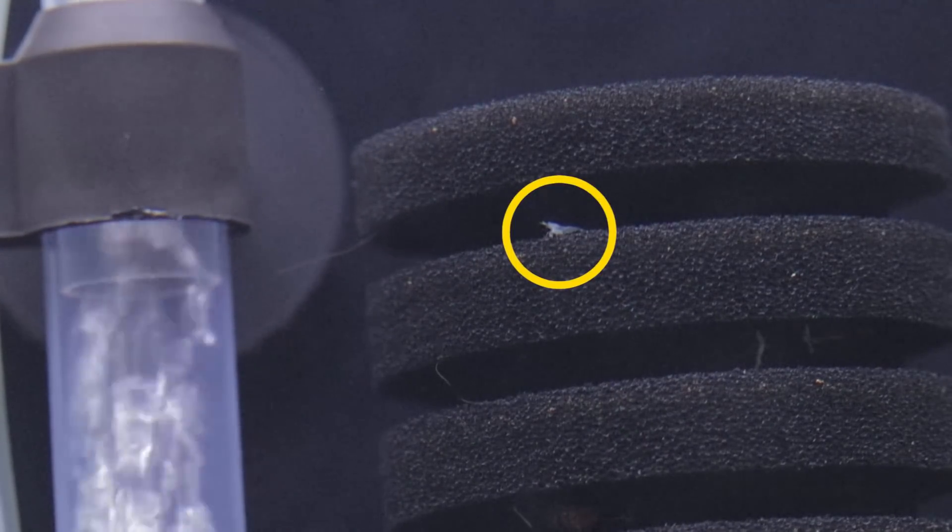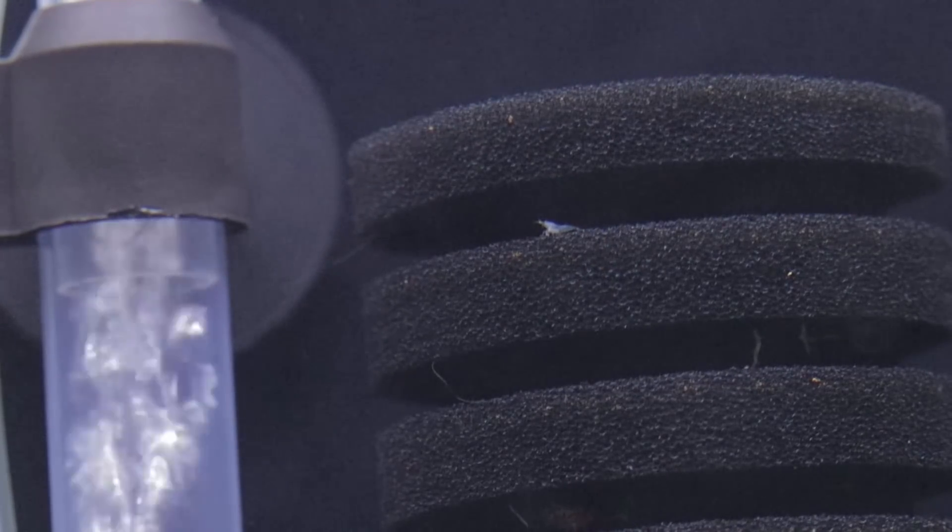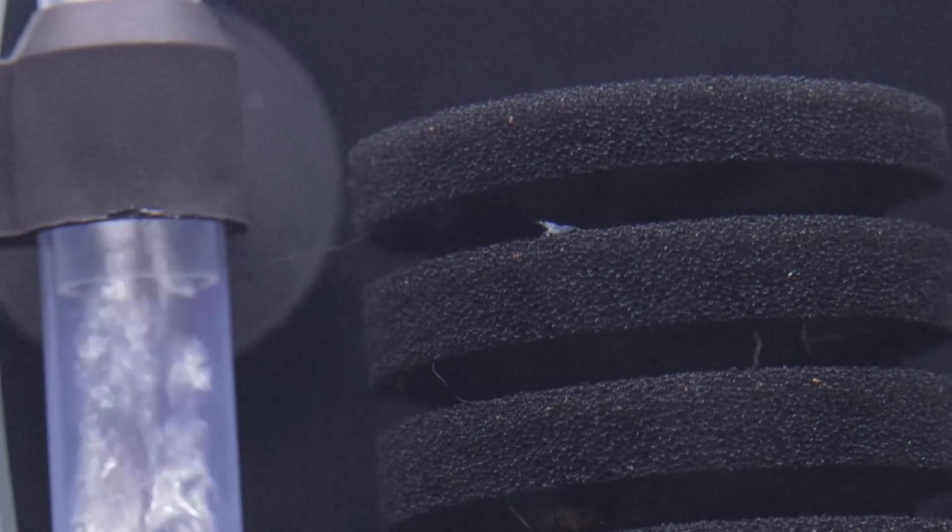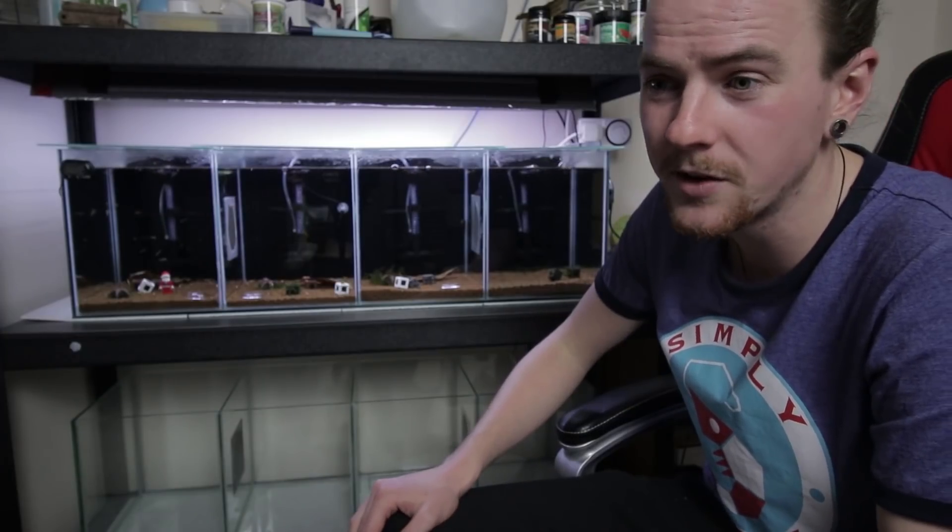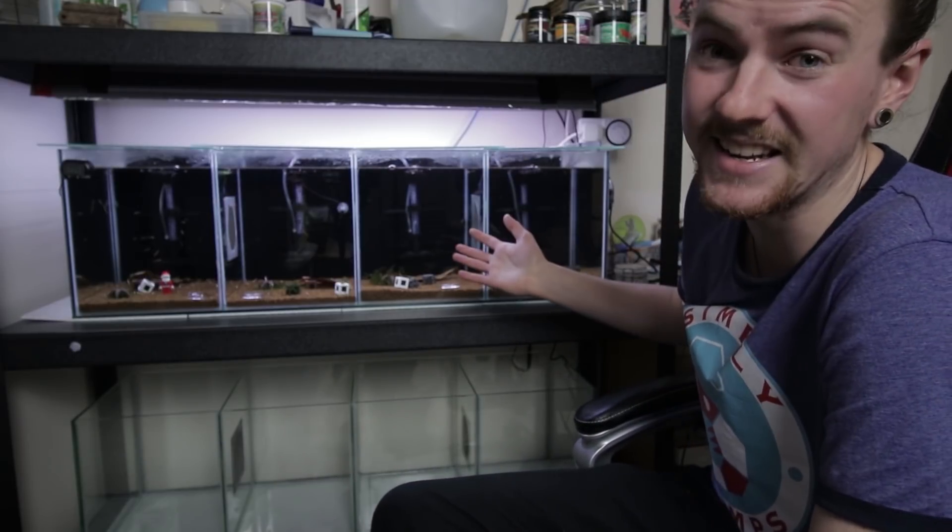Now the diameter of the holes in the mesh that I've actually siliconed in is one millimeter. Now I thought, well, that's pretty tiny. It's definitely not let the adults through. And I did kind of wonder whether it would let the babies through. And evidently, it does.